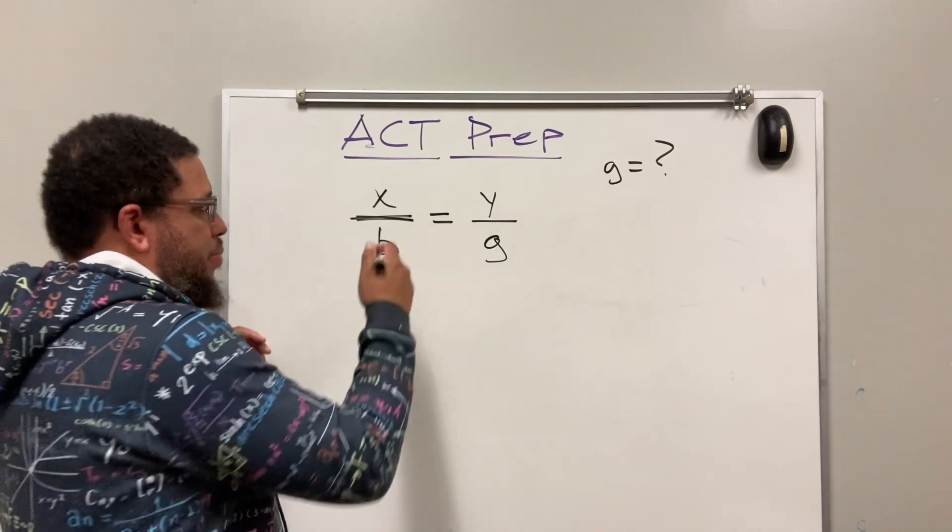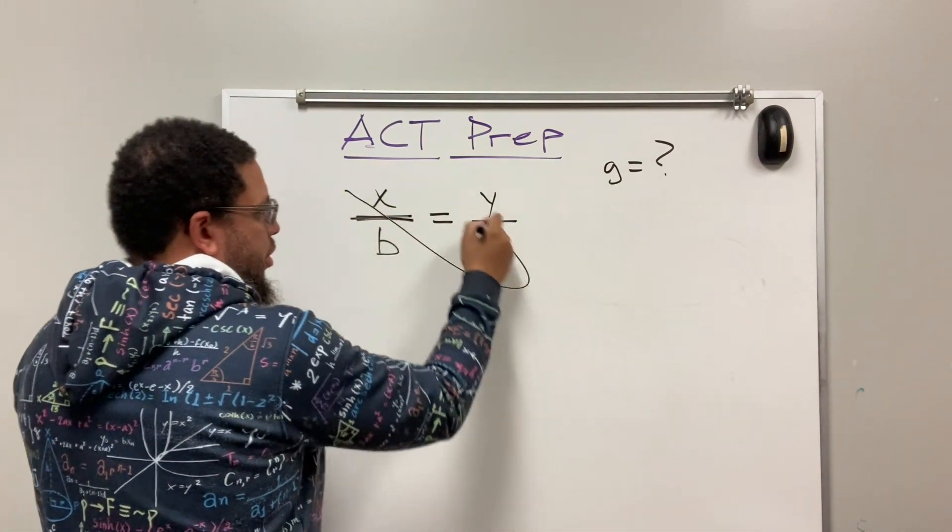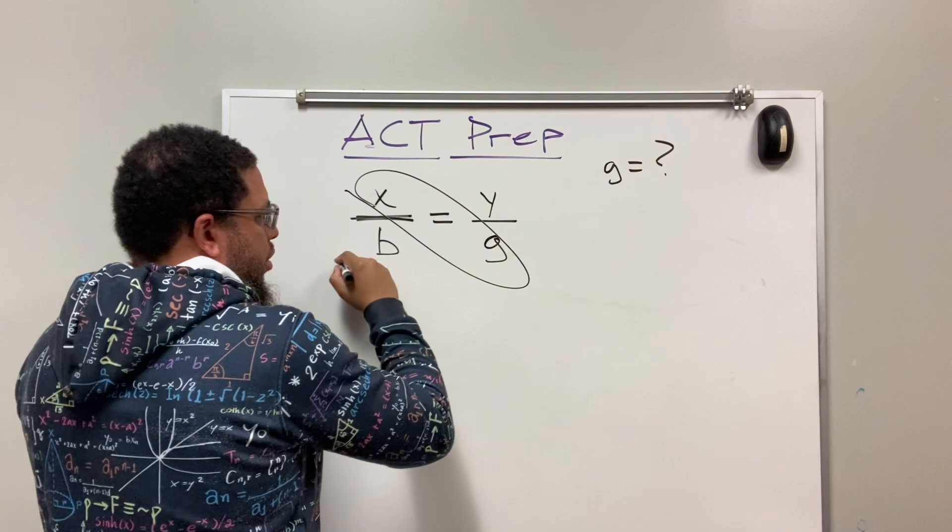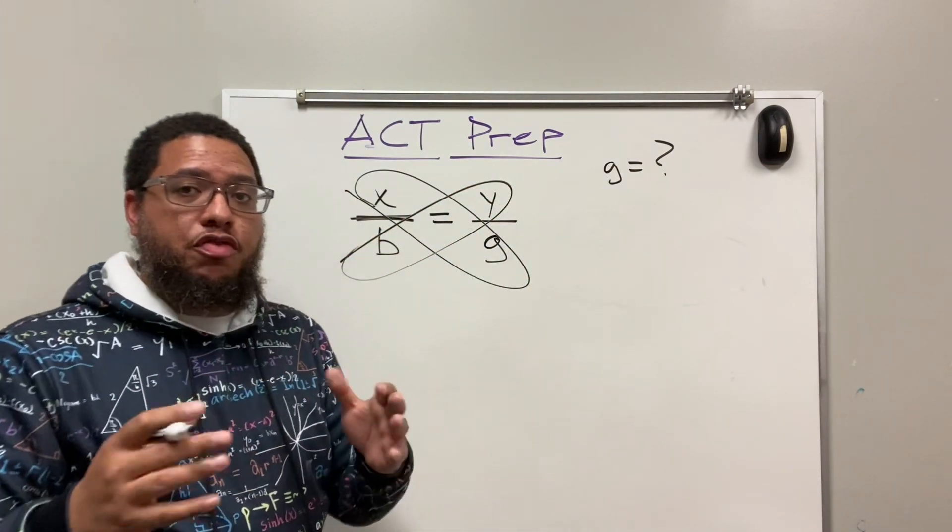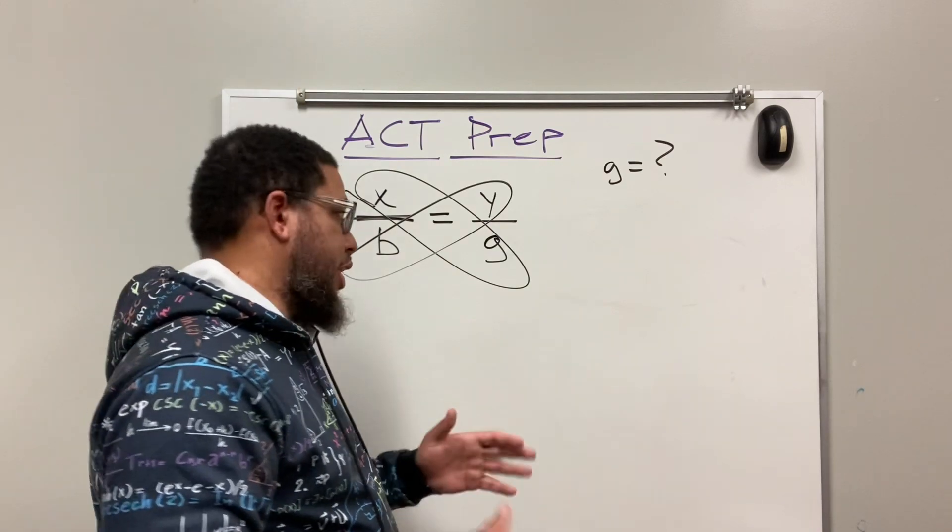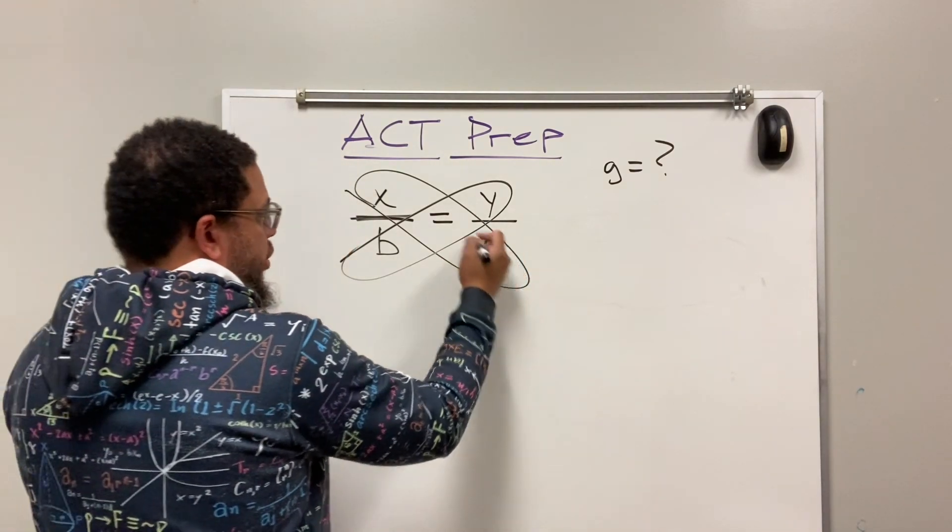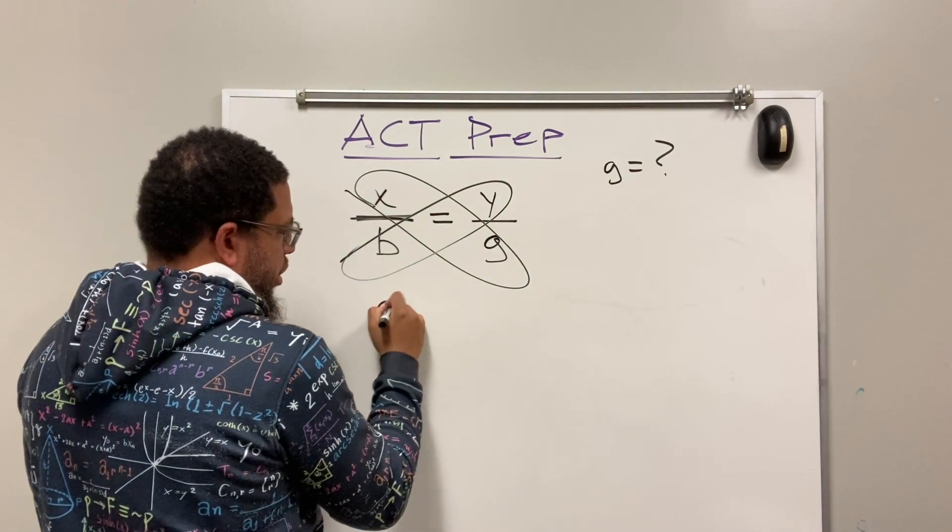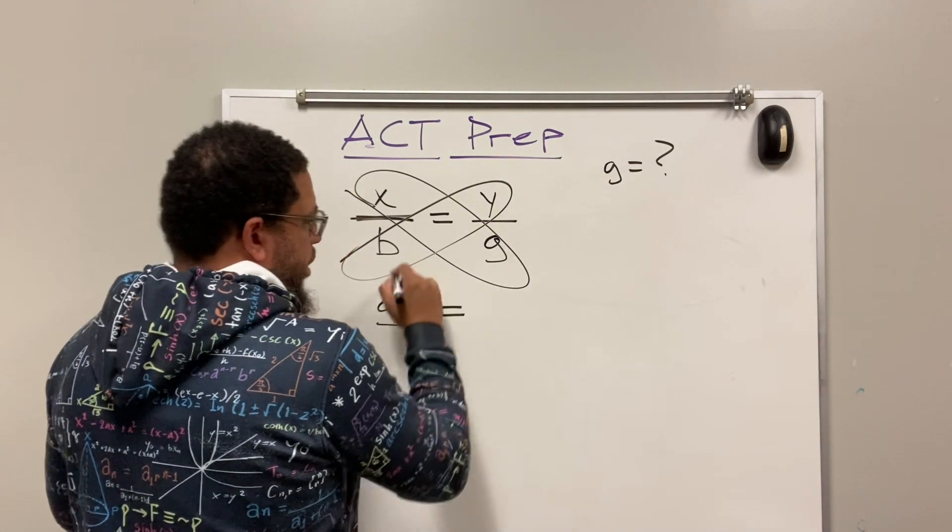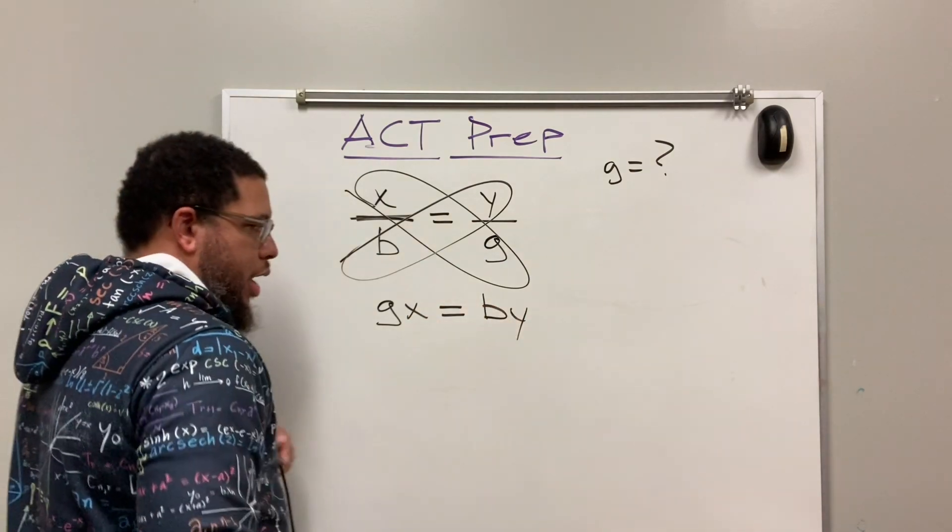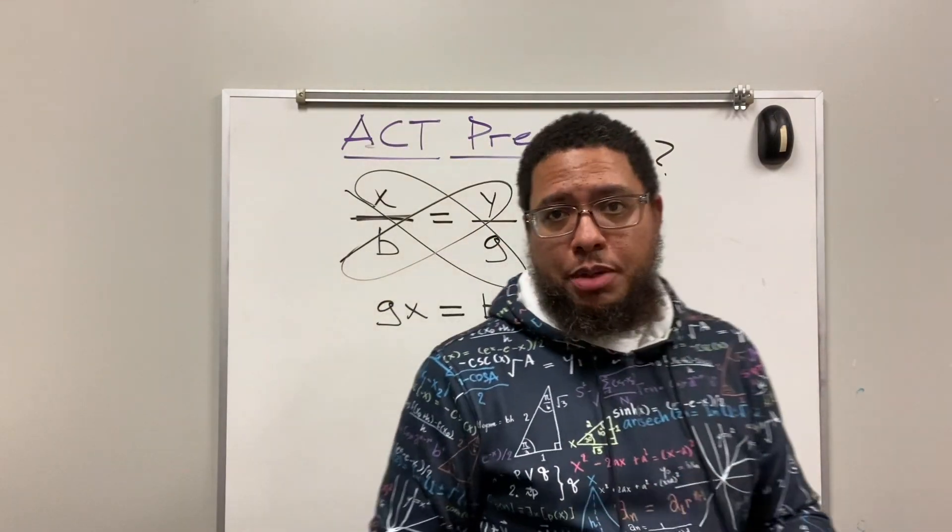Alright, so because this is a proportion, I'm doing the Malcolm X method. One diagonal and another diagonal. I do that to get rid of the fractions. That's the first thing I do. I want to get rid of the fractions. So I'm doing G times X. So that's GX. It doesn't matter if you do XG, GX. It doesn't matter. And then I'm doing BY. GX equals BY, right? So GX equals BY.